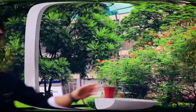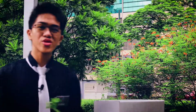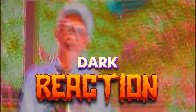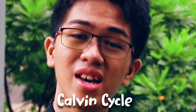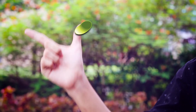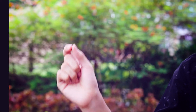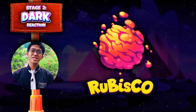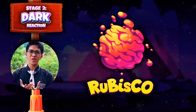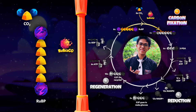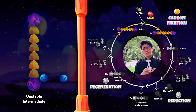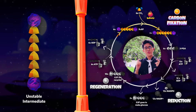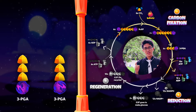Now let me introduce you to the Dark Reaction, or the Calvin Cycle. Here in the stroma, it doesn't require sunlight.